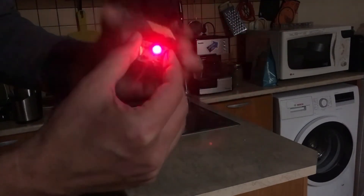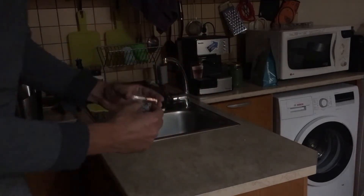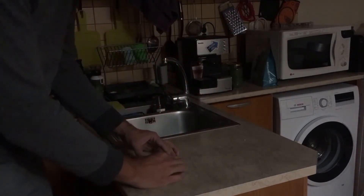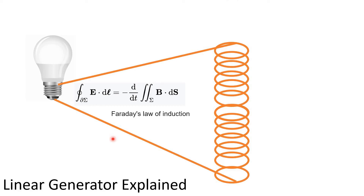Ok, so here comes the explanation of how the linear generator works. We have coils. These coils are connected to the wire loop.